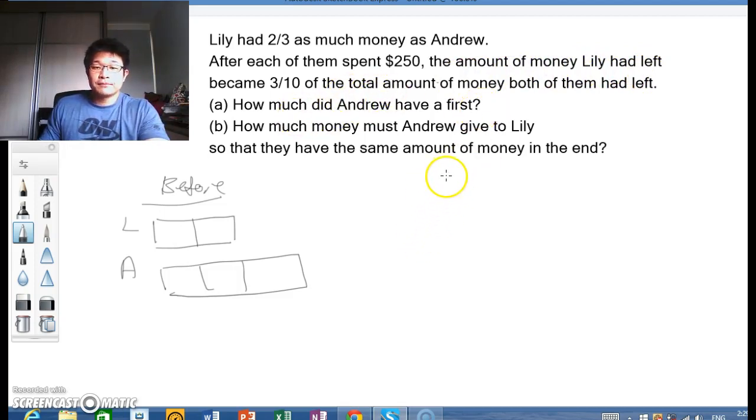That means, let's put the spending into the model here. They both spent $250 so this amount here would be $250 and it is constant for the two of them.